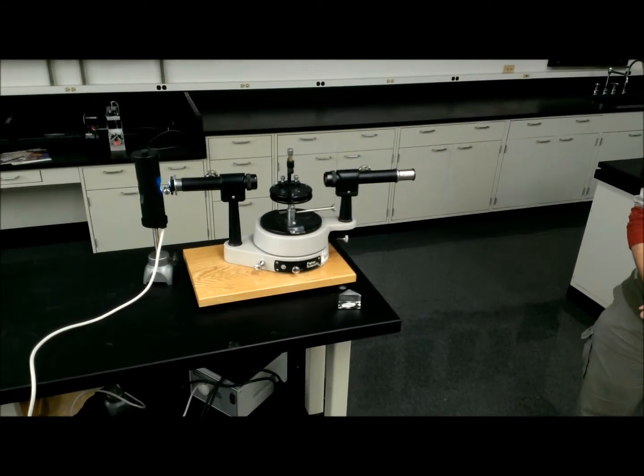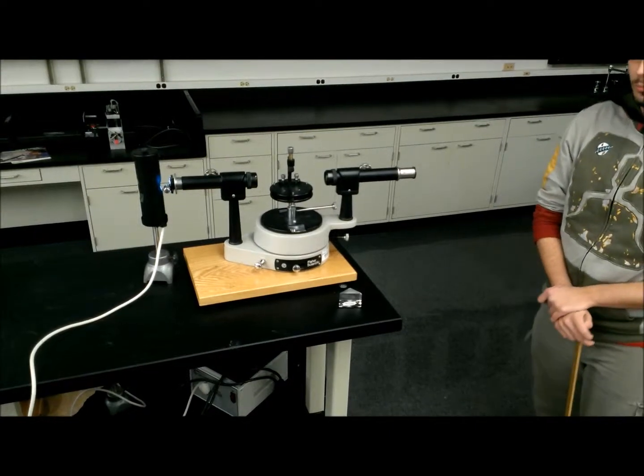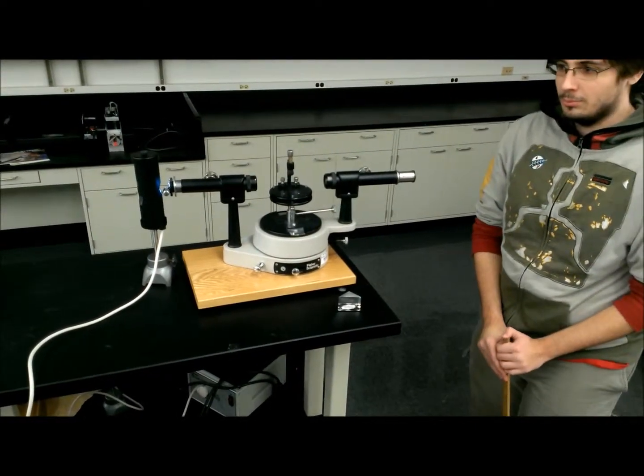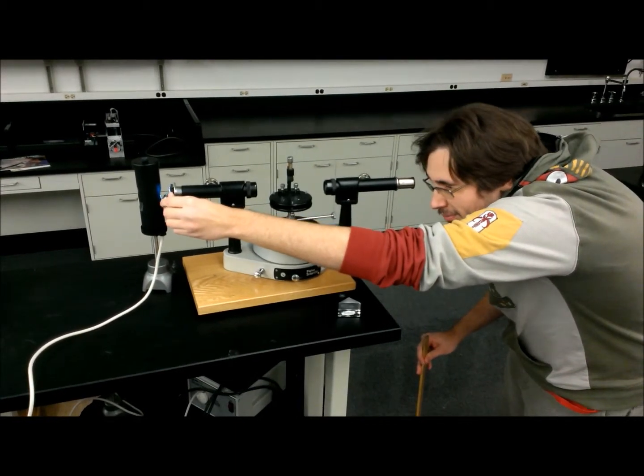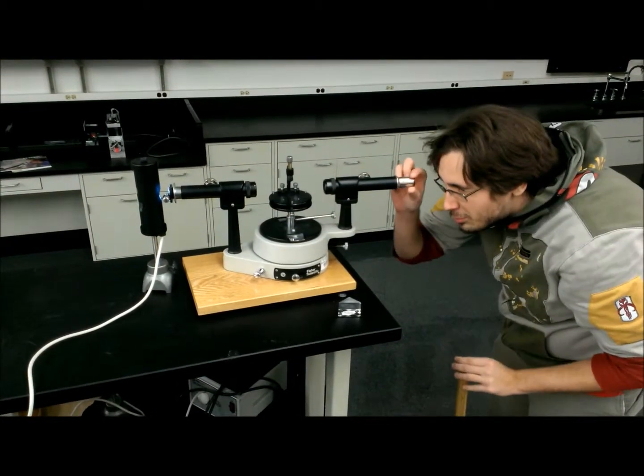The first step is to make sure that the table is level, the collimator's width is adjusted so that the finest visible slit is observed, the crosshairs are aligned with the slit, and a measurement of the angle should be recorded.